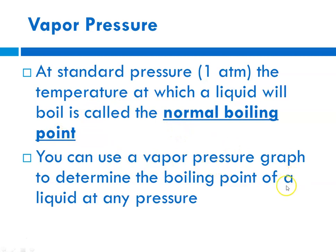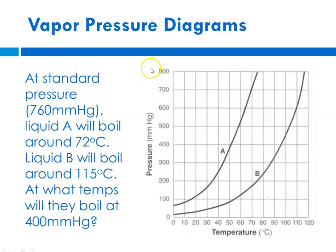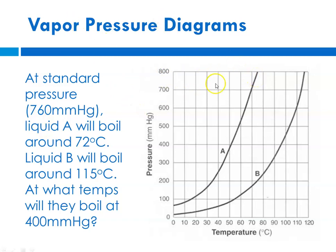We use a vapor pressure graph or vapor pressure diagram to determine the boiling point of a liquid at any pressure. The x-axis is temperature and the y-axis is pressure in millimeters — atmospheric pressure at sea level is 760 mmHg. If we look at these two liquids and ask where liquid A boils at standard pressure, we go to 760 mmHg, go across until we encounter liquid A, then read down the temperature — it looks like about 72°C.